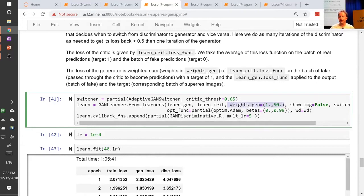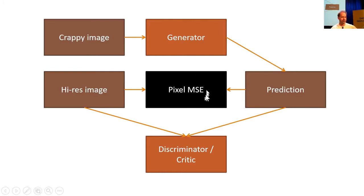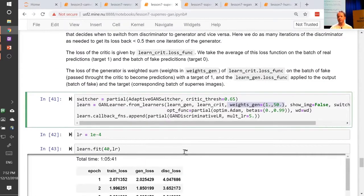We don't only use the critic as the loss function. If we only used the critic, the GAN could get very good at creating pictures that look like real pictures but have nothing to do with the original photo at all. So we actually add together the pixel loss and the critic loss. Those two losses are on different scales, so we multiply the pixel loss by something between about 50 and 200 — that range generally works pretty well.